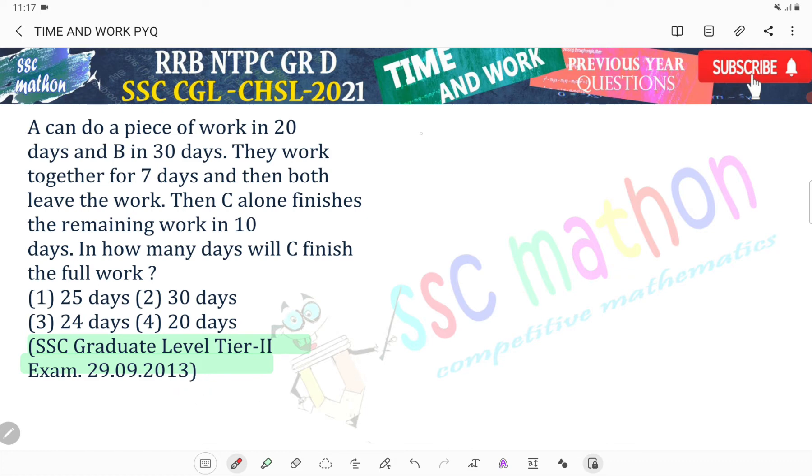A can do a piece of work in 20 days, B in 30 days. They work together for 7 days, then both leave the work. Then C alone finishes the remaining work in 10 days. In how many days will C finish the full work?